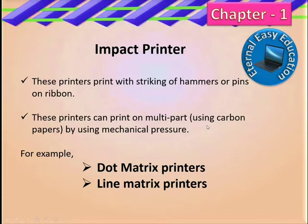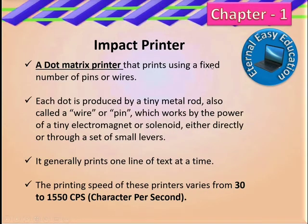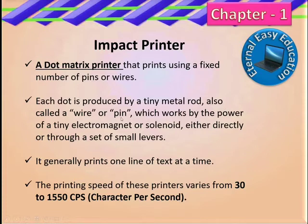These are very famous impact type printers: dot matrix and line matrix. In dot matrix, a fixed number of pins or wires are used. Each dot is produced by a tiny metal rod, also called a wire or pin.